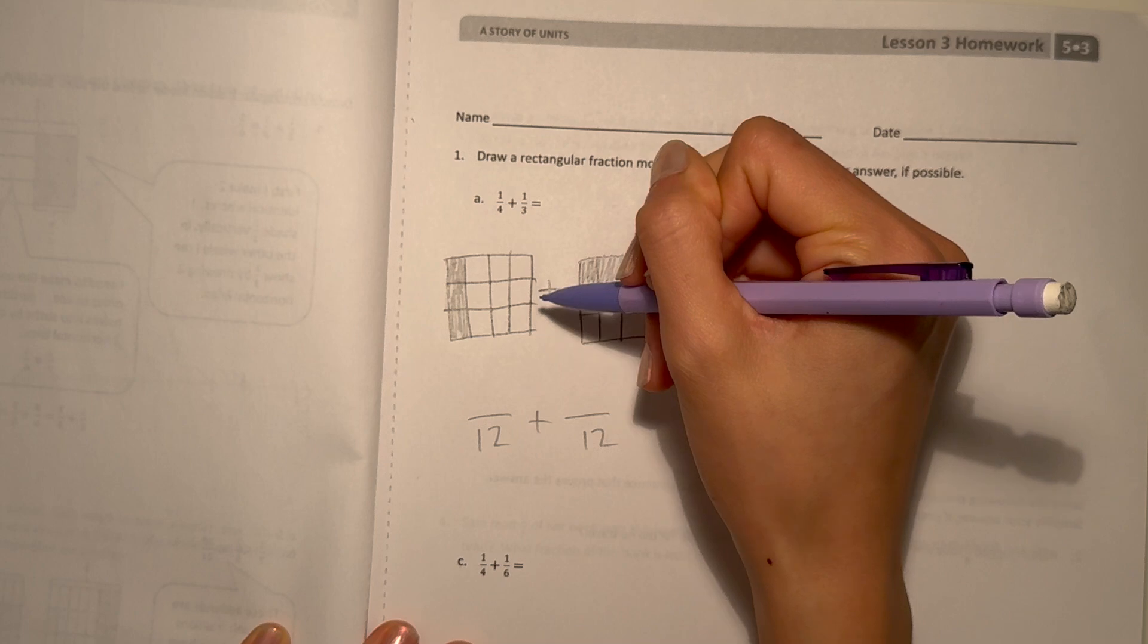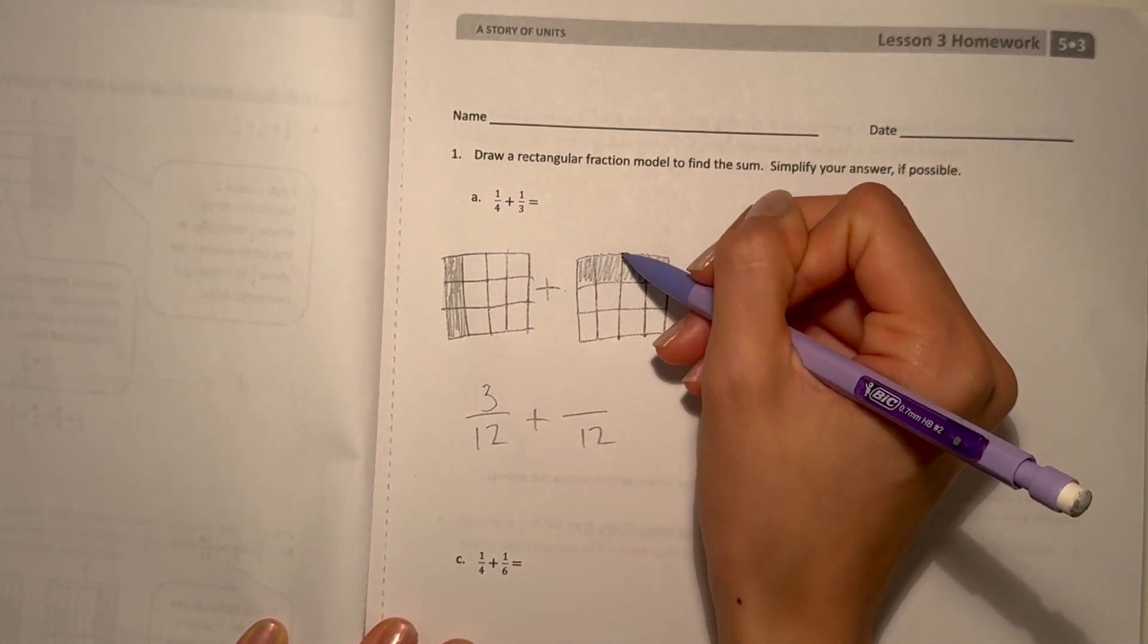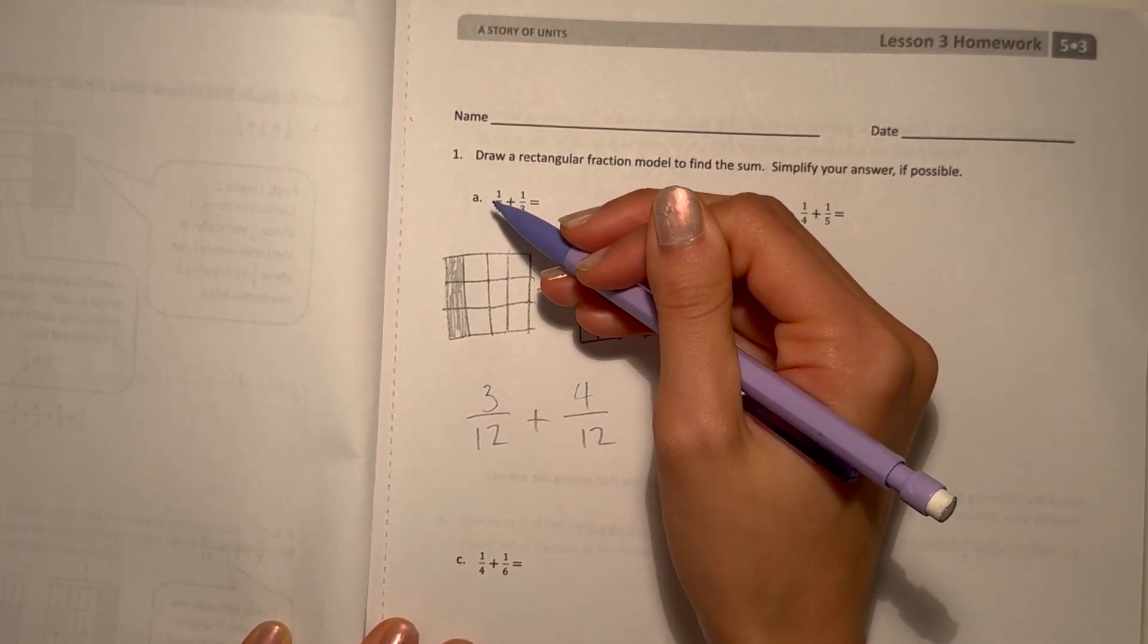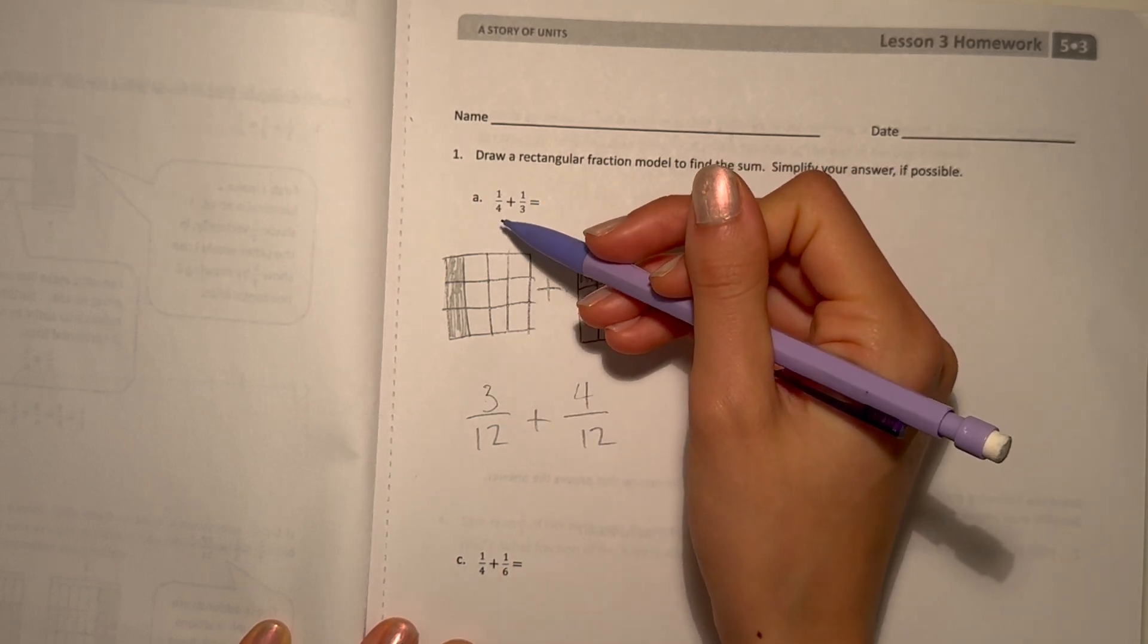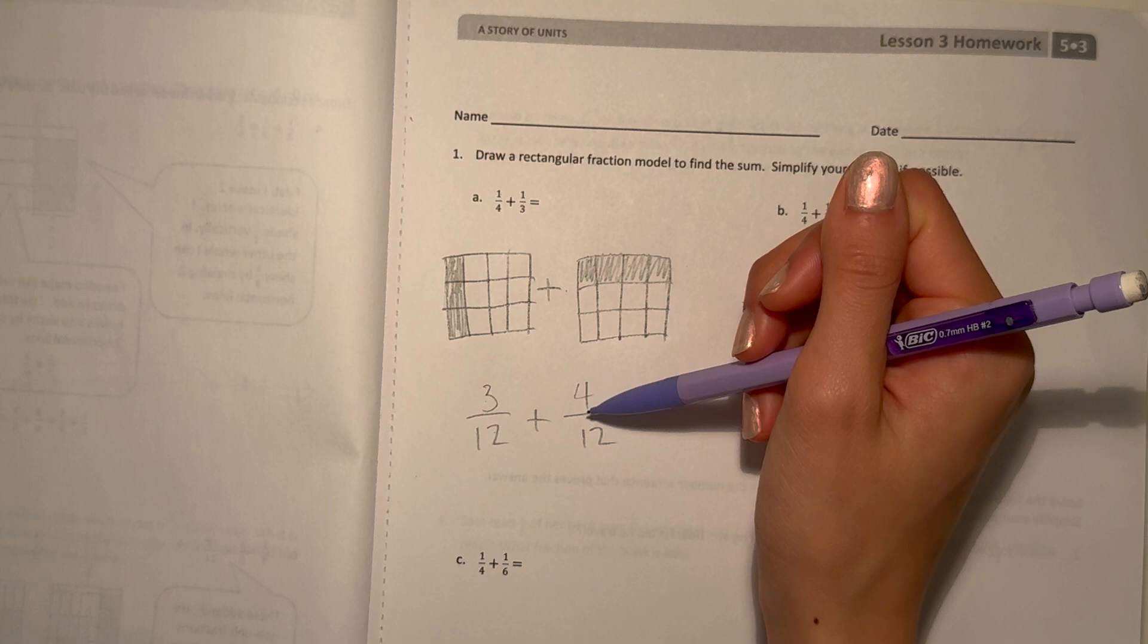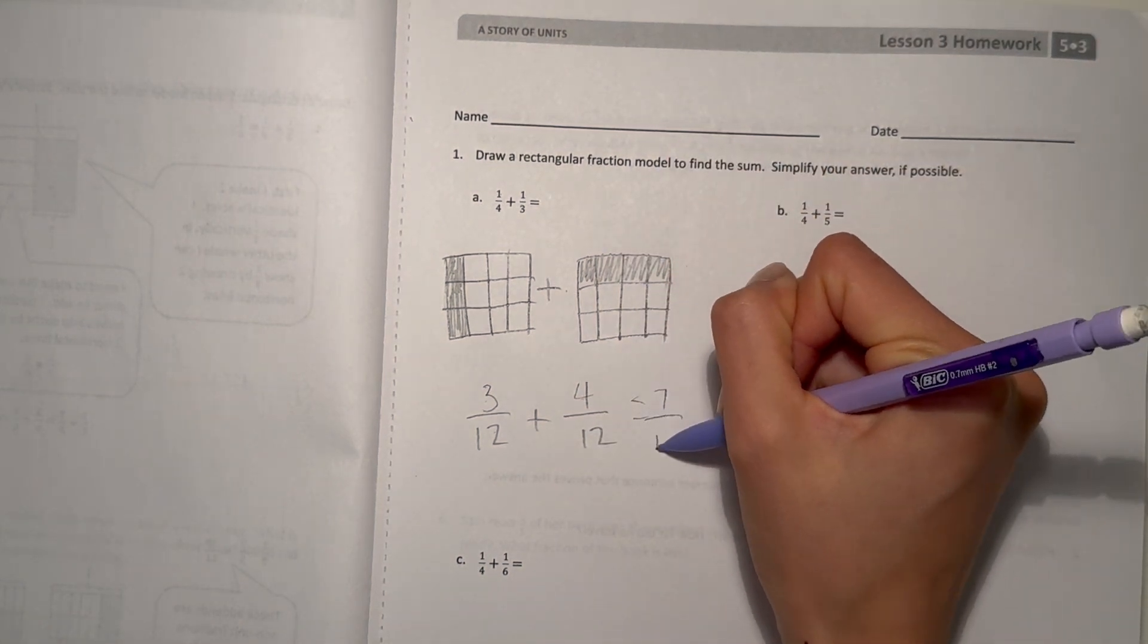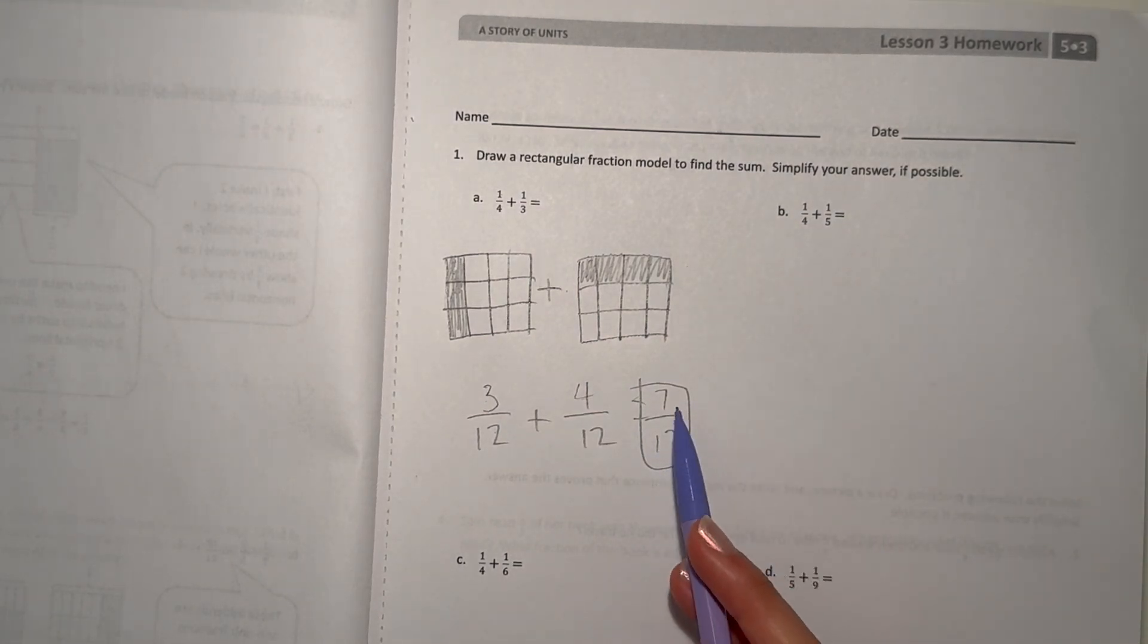So then, that'll give us three shaded out of twelve, plus four shaded out of twelve. Think about it, it's one-fourth times three, because one times three is three, and four times three is twelve. Plus one-third times four, because three needs to be multiplied by four to get to twelve, which will give four over twelve. And three plus four is seven, over twelve. So that's our answer. And that's our answer, because we can't simplify it any further, because seven is a prime number.